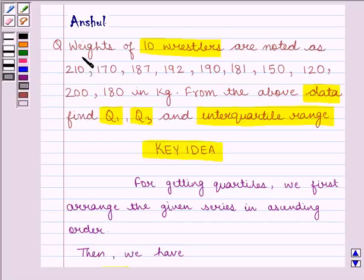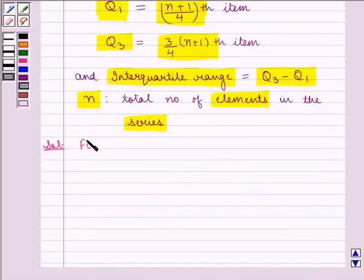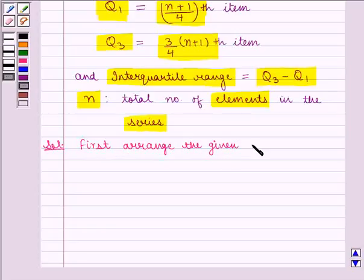Now in the question, weights of 10 wrestlers are given as follows. We have to calculate Q1, Q3 and interquartile range from this given set of data. Using the key idea for getting quartiles, we first need to arrange the given weights in ascending order.